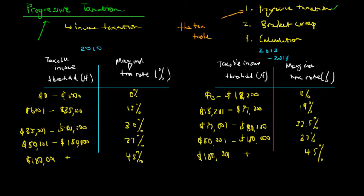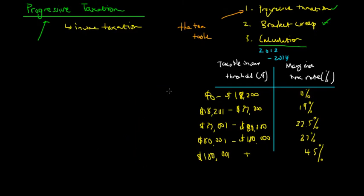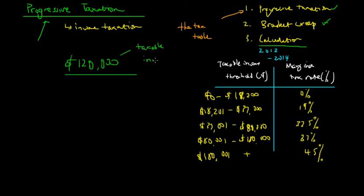Now we'll look at how income taxation is calculated using an example. We're going to use the 2012 to 2014 tax rate — not the 2010 rate, as it's no longer applicable in Australia. We'll assume the taxable income earned is $120,000. From $0 to $18,200, we pay zero dollars in tax because the marginal tax rate is 0%.